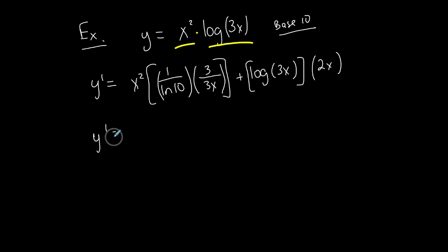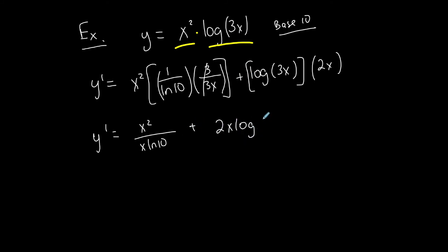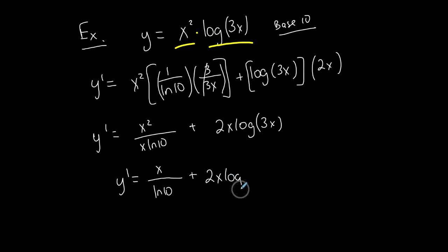Continuing the product rule: plus the second term, log of 3x, times the derivative of the first, which is 2x. Now simplifying — the 3s cancel. We get x squared over 1, putting x squared on top, with x times ln of 10 on the bottom. The 2x goes in front of the log. We also have x squared divided by x, so one x cancels and the extra stays on top. The final first derivative is x over ln of 10 plus 2x times log of 3x.